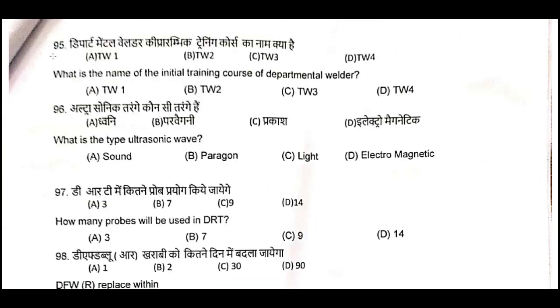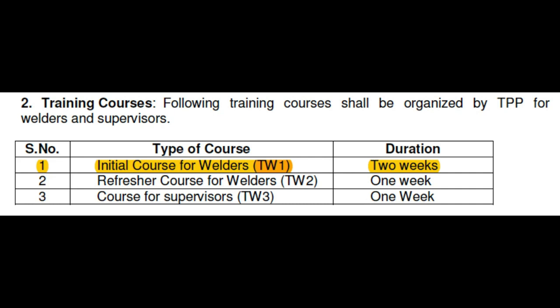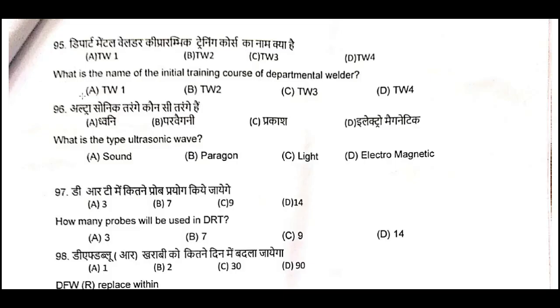Question Number 95: What is the name of the initial training course of departmental welders? For the initial course, that is TW1. Actually, there are three courses for permanent welders and supervisors also. Question Number 95, A is the correct answer: TW1.